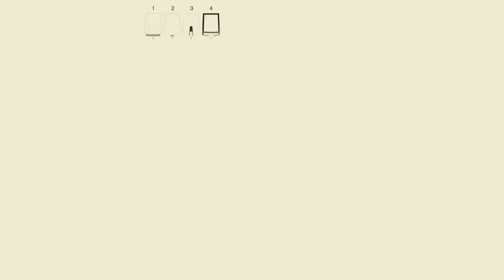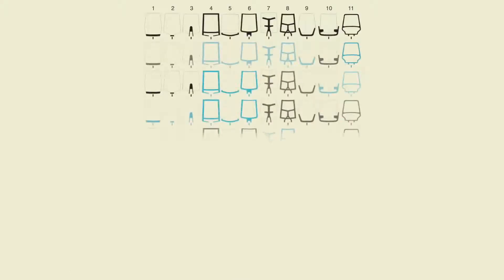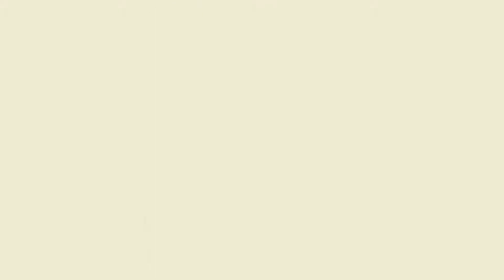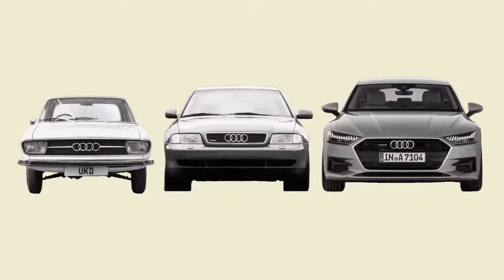When we look at someone we recall their body shape, how they move, and more importantly their face. The car grille and headlights have defined auto brand DNA for generations.